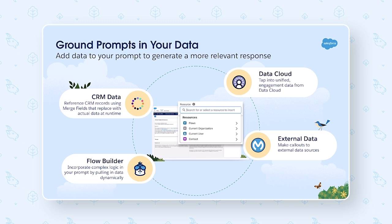Now, we talk about data, and we talk about grounding that data — grounding the prompt. When you start talking about AI, you're going to hear the word grounding a lot. It's very instrumental to getting the AI to do what you want. It's providing context to the AI so that it has a better idea of the relevancy and the accuracy that it's trying to give you in the response.